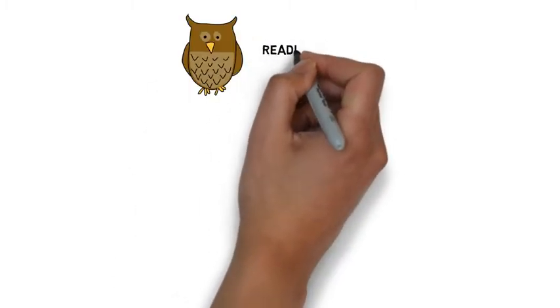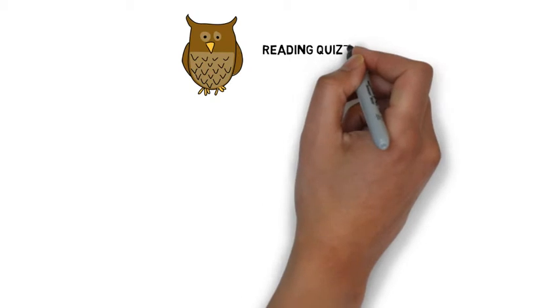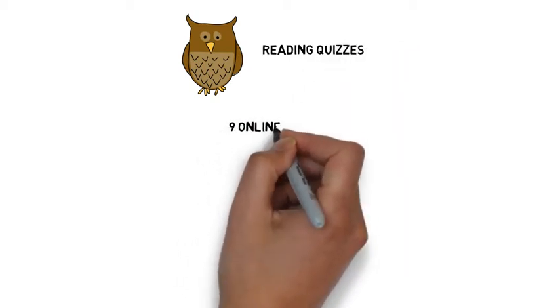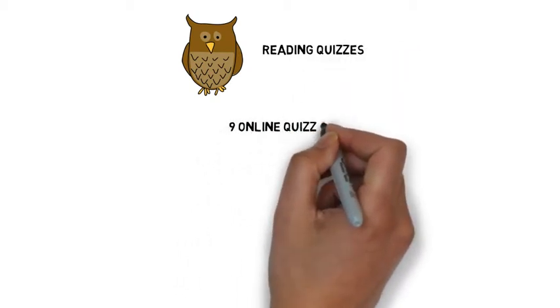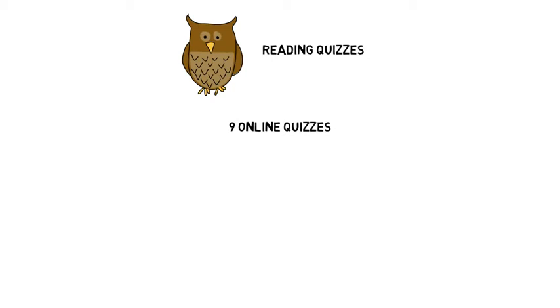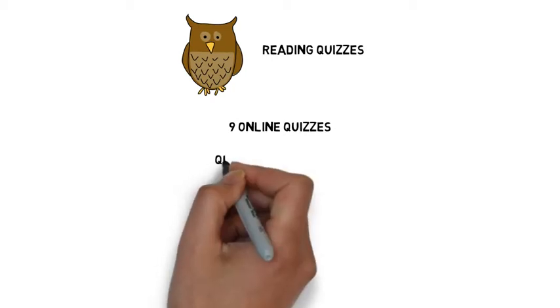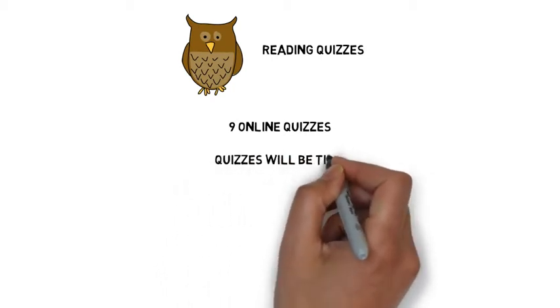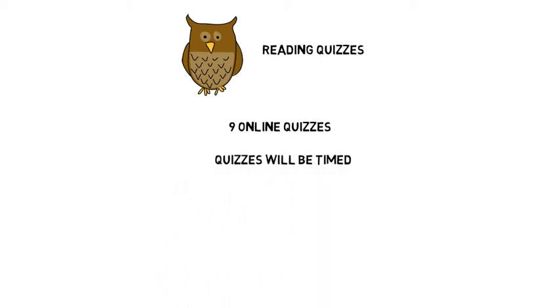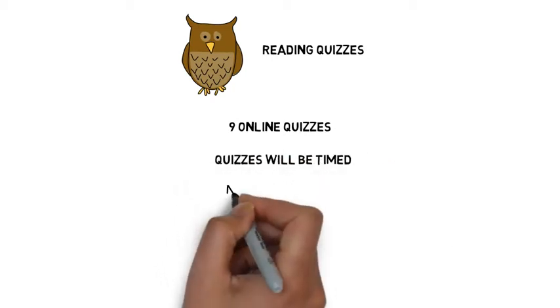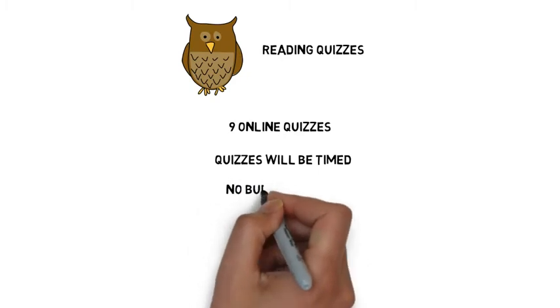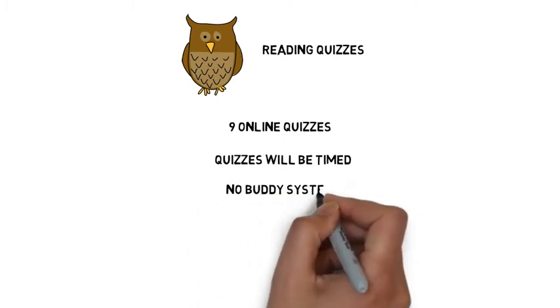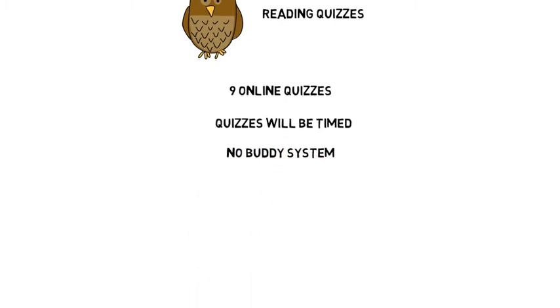Now, reading quizzes. This semester you'll take nine online quizzes. Each quiz is timed, and each student takes a unique quiz, so the buddy system doesn't work well here.